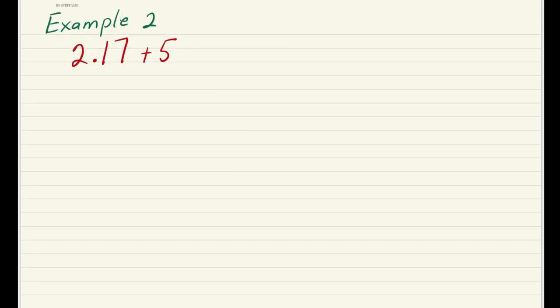For example 2, we have 2.17 plus 5. Remember that 5 can be written as 5.0 or 5.00 and so on. But for this question, we're going to remember that 5 also has a decimal point and we're going to use the placeholders that we learned from before. In this instance, we're going to put one 0 here and another 0 here to make it easier for us to do the additions without getting confused as to where our decimal point is.